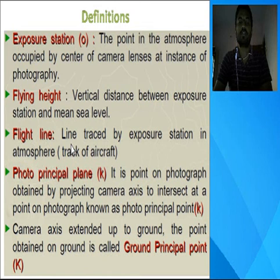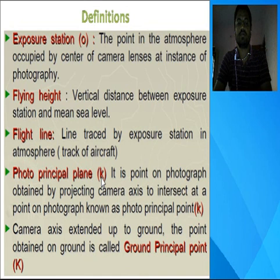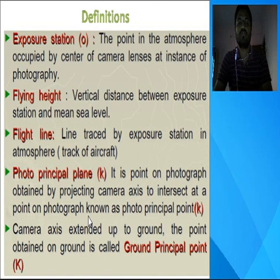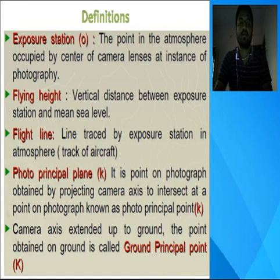The photo principal point is the point on a photograph obtained by projecting the camera axis to intersect at a point on the photograph. The ground principal point (capital P) is obtained when the camera axis is extended up to the ground. The photo nadir point (small n) is the point on a photograph obtained by dropping a truly vertical line — the plumb line — from the camera center. The ground nadir point (capital N) is the point on the ground where the plumb line extended from the camera center meets the ground.